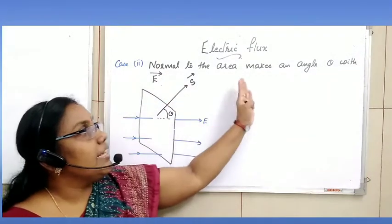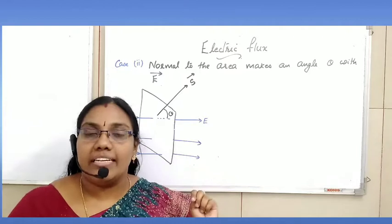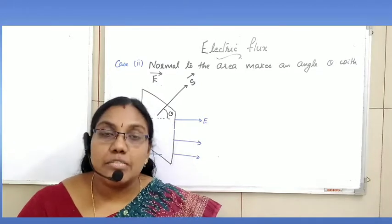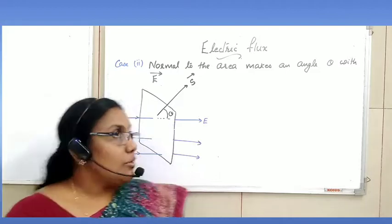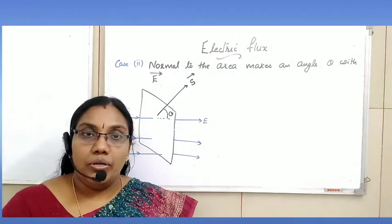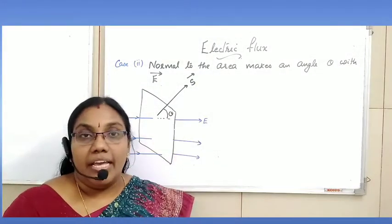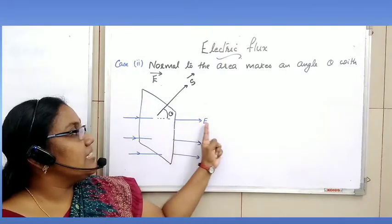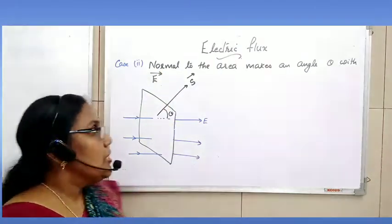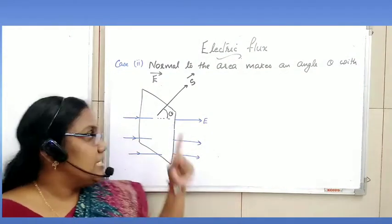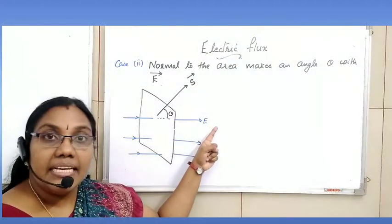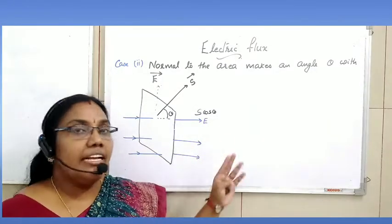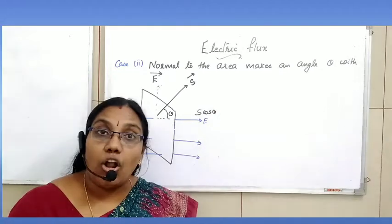In this case, the area vector can be resolved into two components — one along the direction of electric field which is S cos θ, and another in the perpendicular direction which is S sin θ. We need only the S cos θ component because S cos θ and electric field are along the same direction.